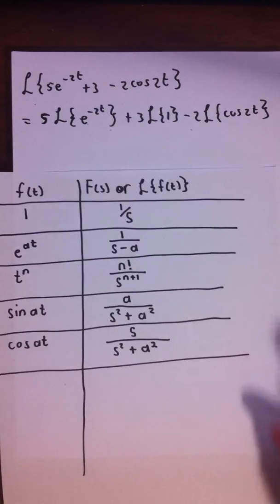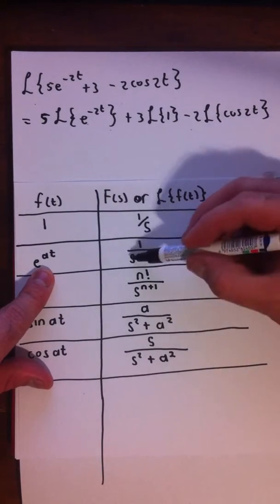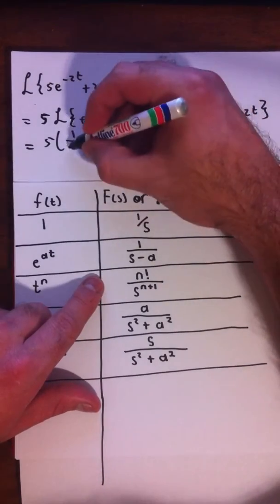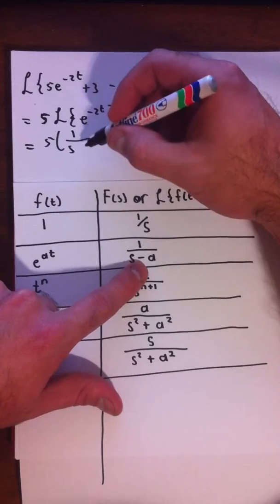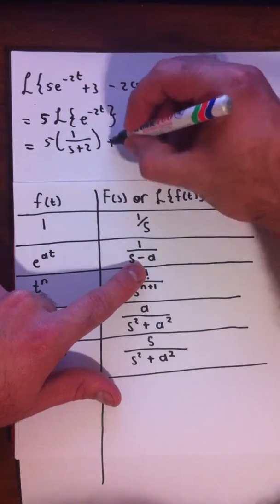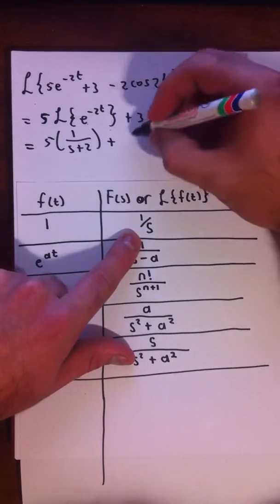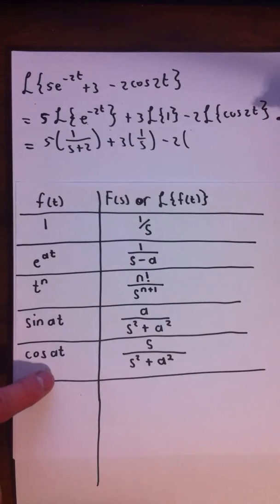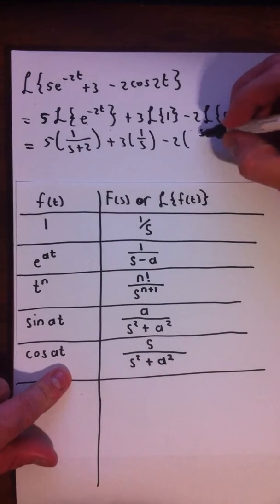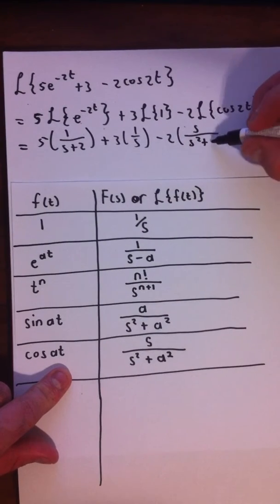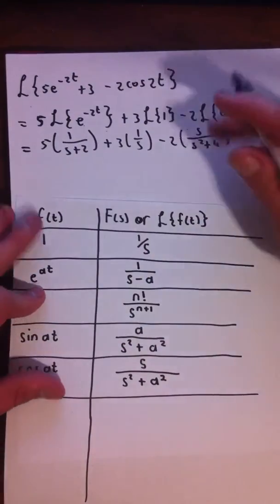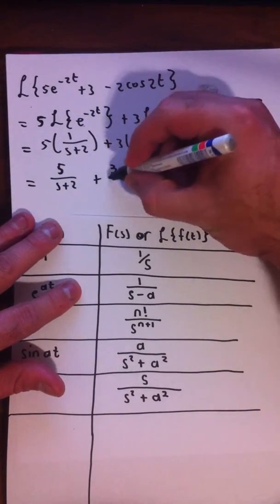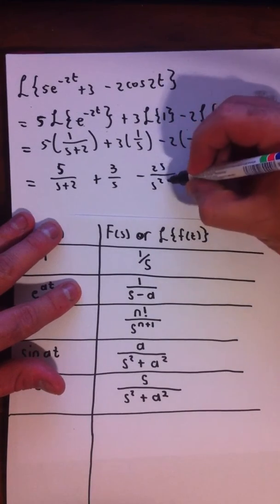We haven't used the exponential entry yet in this video. The Laplace transform of e^(at) is 1 over s minus a. So with a equals negative 2, that gives 1 over s minus (negative 2), which is 1/(s+2). Combining everything: 5/(s+2) plus 3/s, minus 2 times s over s² plus 4, simplifying to 5/(s+2) plus 3/s minus 2s/(s²+4).